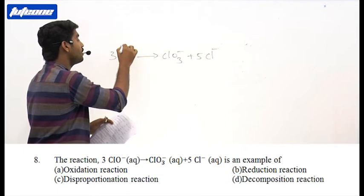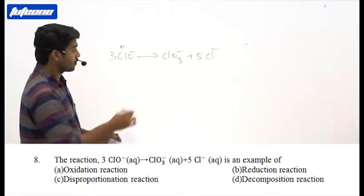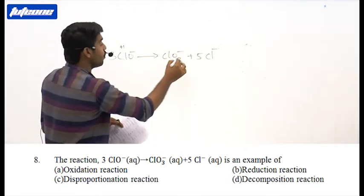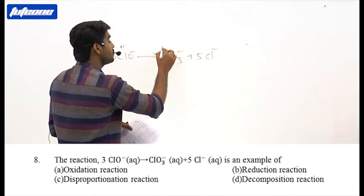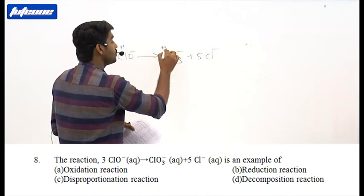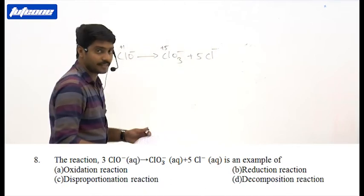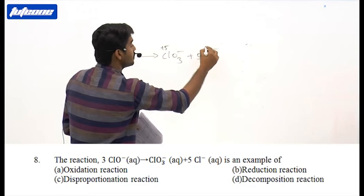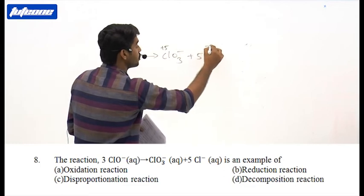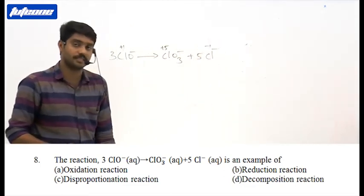In ClO₃⁻, chlorine has a plus 5 oxidation state, and in Cl⁻, chlorine has a minus 1 oxidation state.